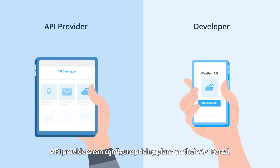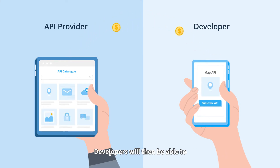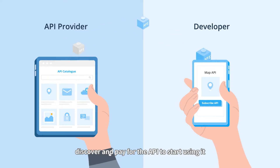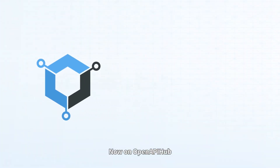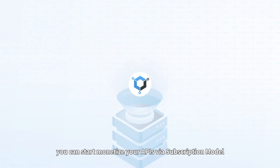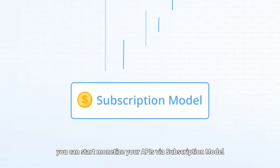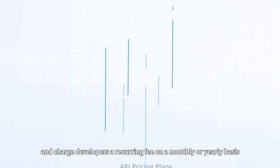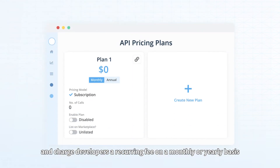To monetize an API, API providers can configure pricing plans on their API portal. Developers will then be able to discover and pay for the API to start using it. Now on OpenAPI Hub, once you have connected to your payment account, you can start monetize your APIs via subscription model and charge developers a recurring fee on a monthly or yearly basis.